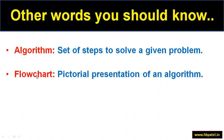Before we conclude, there are two common terms to understand: algorithm and flowchart. An algorithm is nothing but a set of steps to solve a given problem — it can be written in any English-type language; there is no specific language or format required. A flowchart is a graphical or pictorial way of representing an algorithm. In our next video, we'll formally define them, work through examples, and have some assignments.